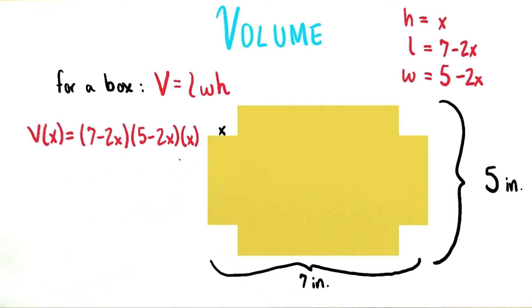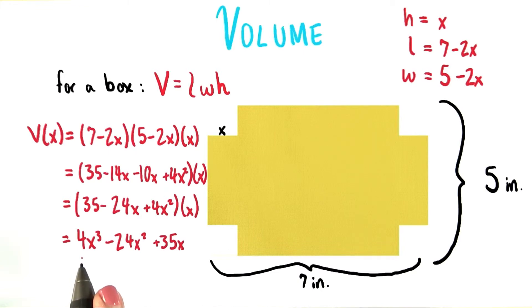Now, of course, you could multiply this out as well. And if we go through the whole task of multiplying everything out, we end up with 4x cubed minus 24x squared plus 35x.